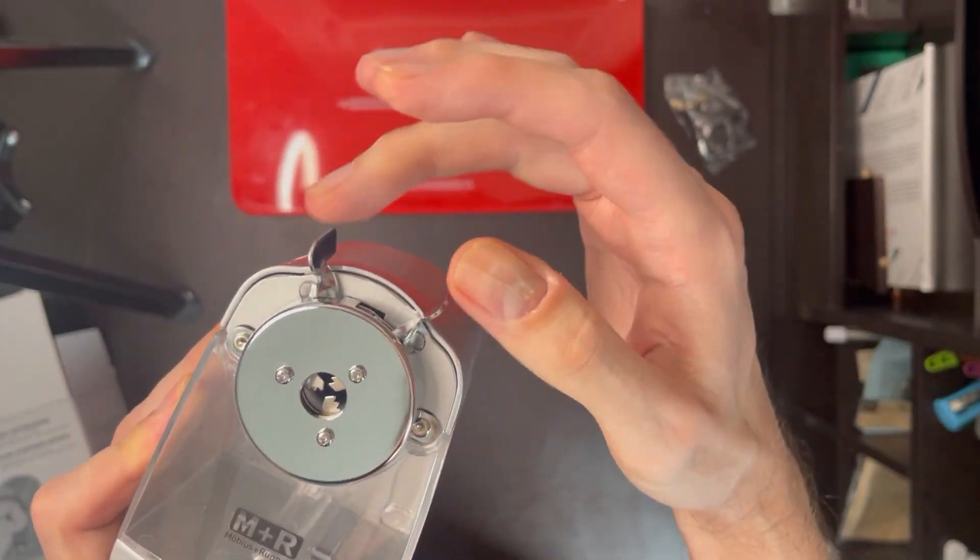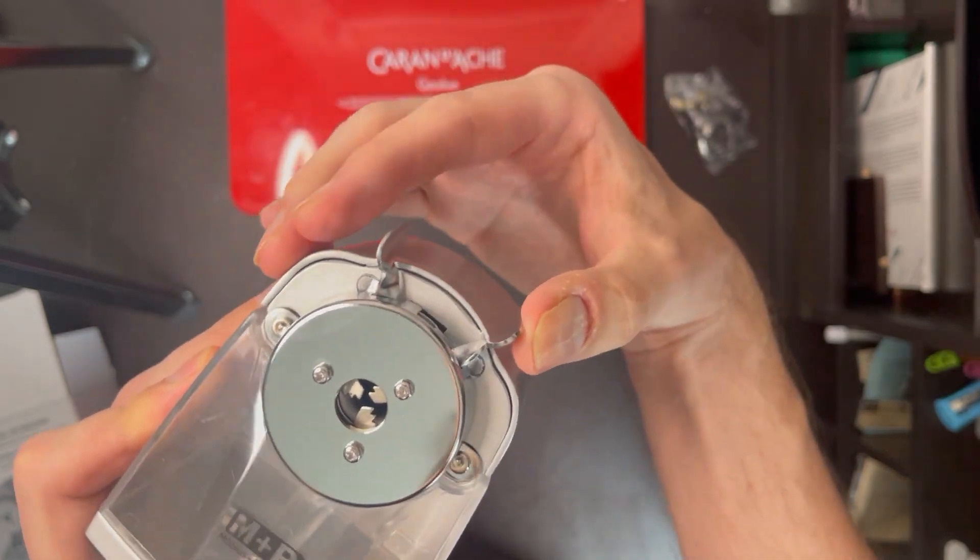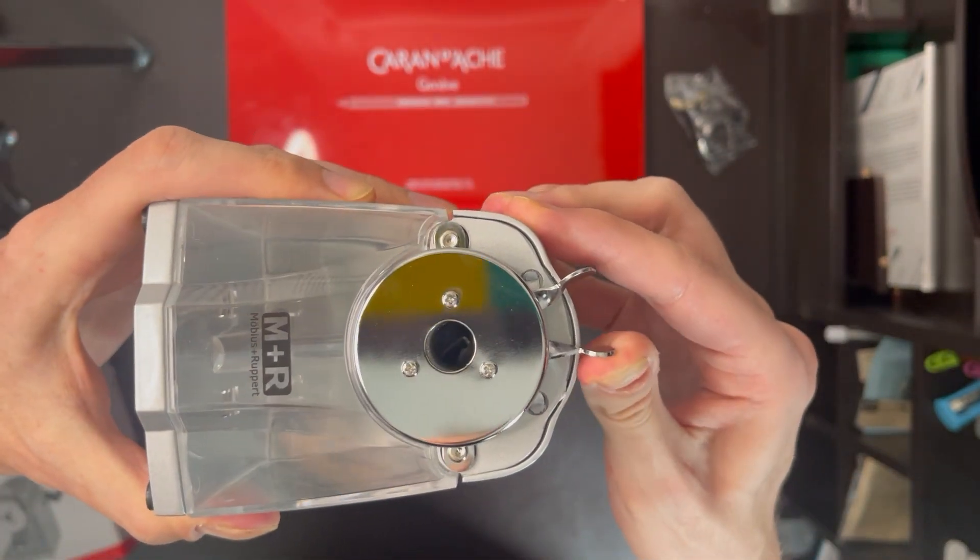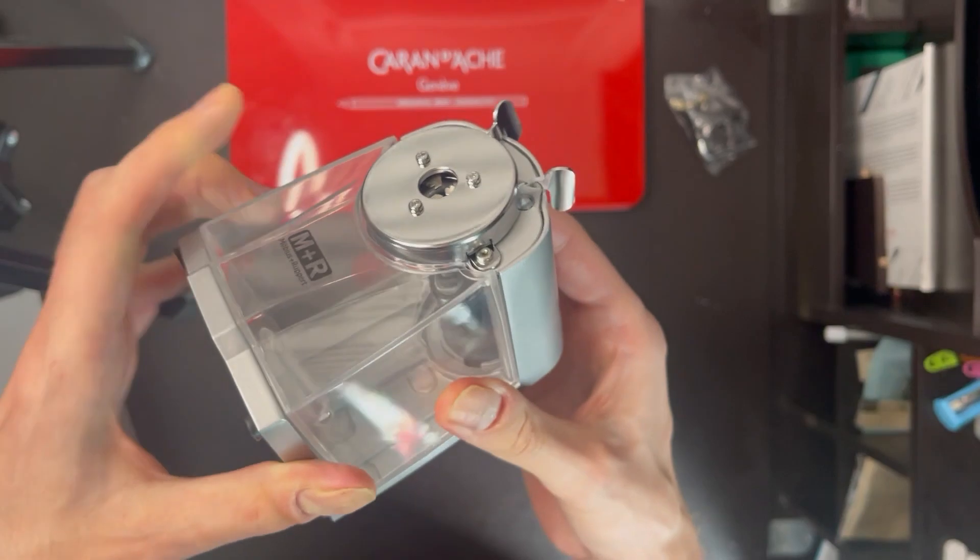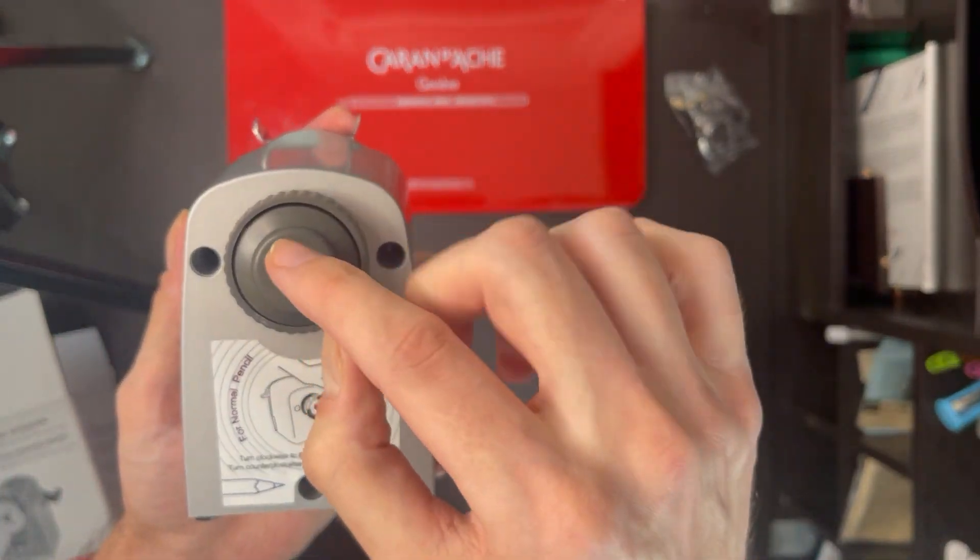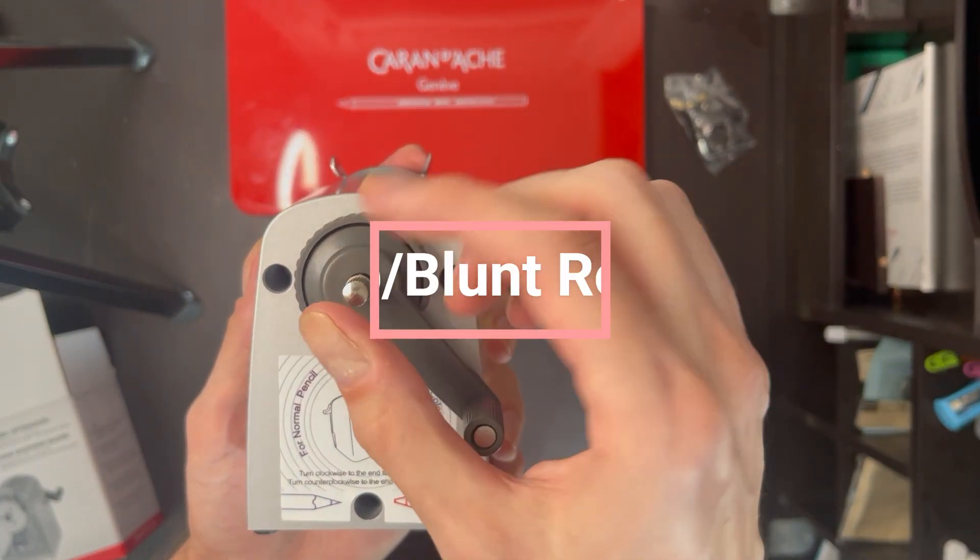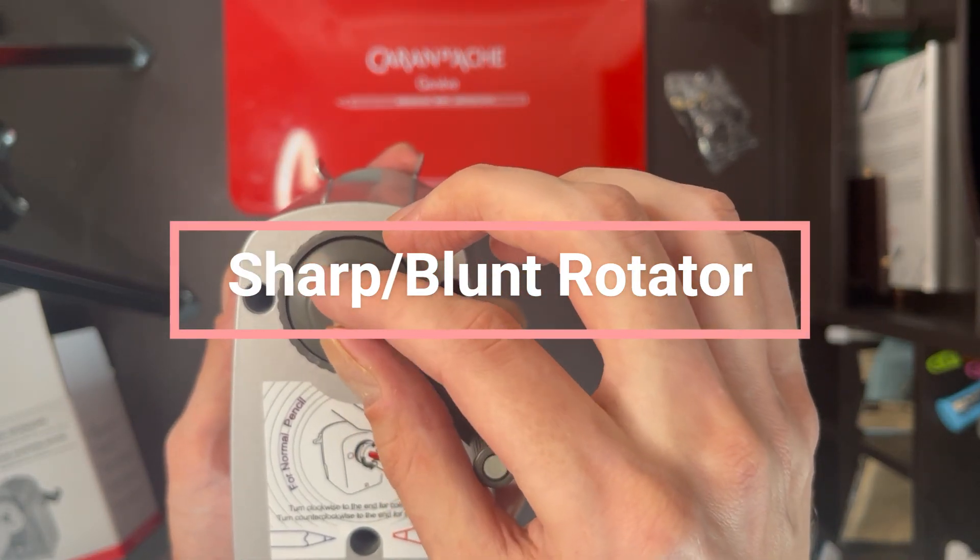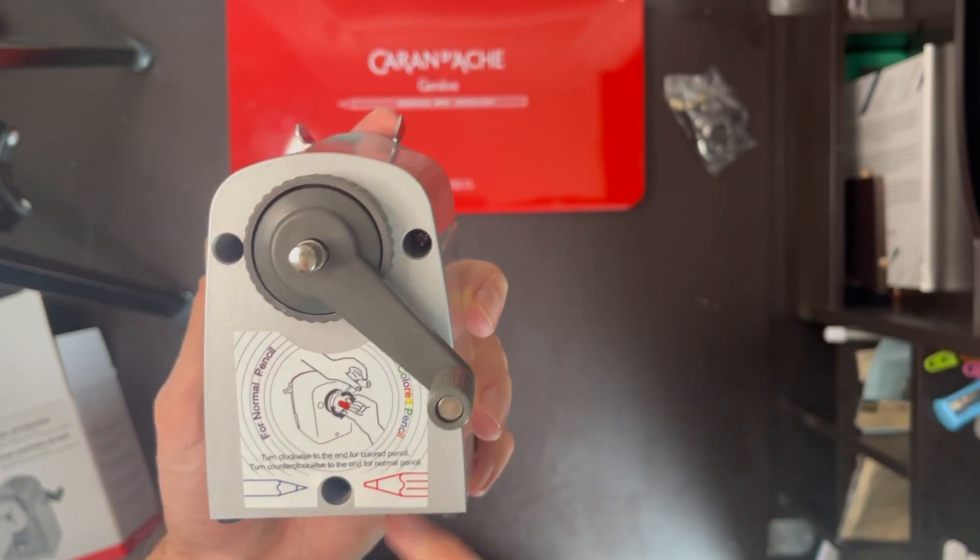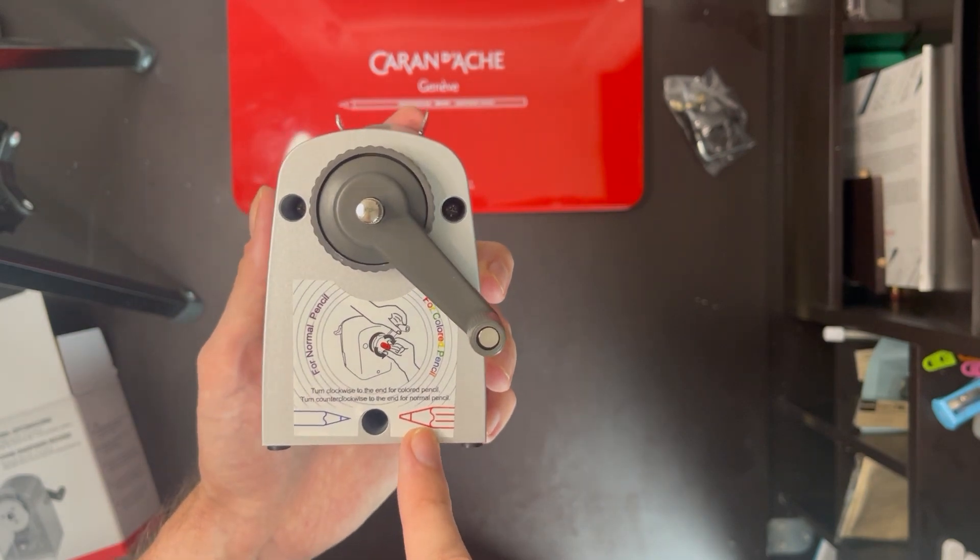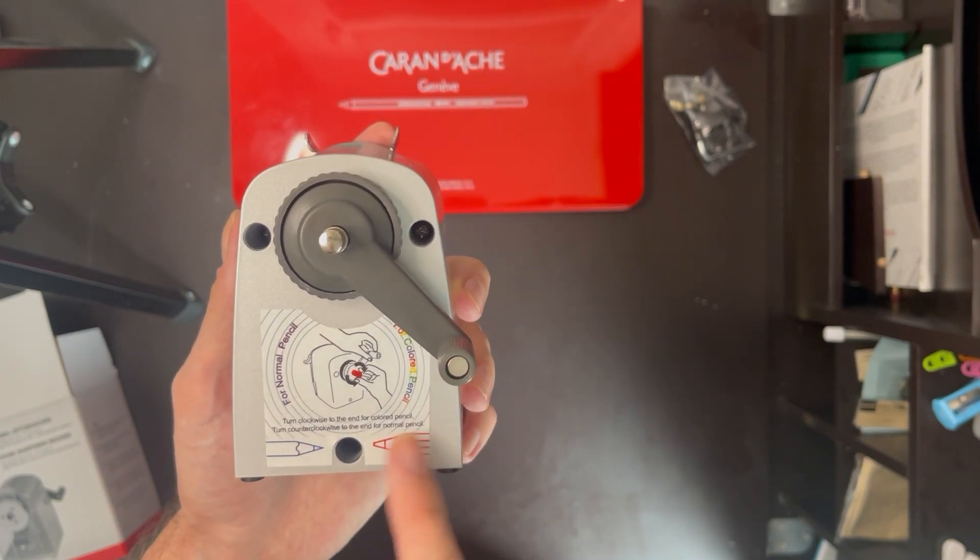You've got these four rubber feet at the bottom so you don't damage your table. And only this section here moves. This one stays set. So you can see the jaws there that holds in the pencil. On the back, this little knob here, if you turn this clockwise, it will say it's for colored pencils, but it's to do with the sharpness of the nib.